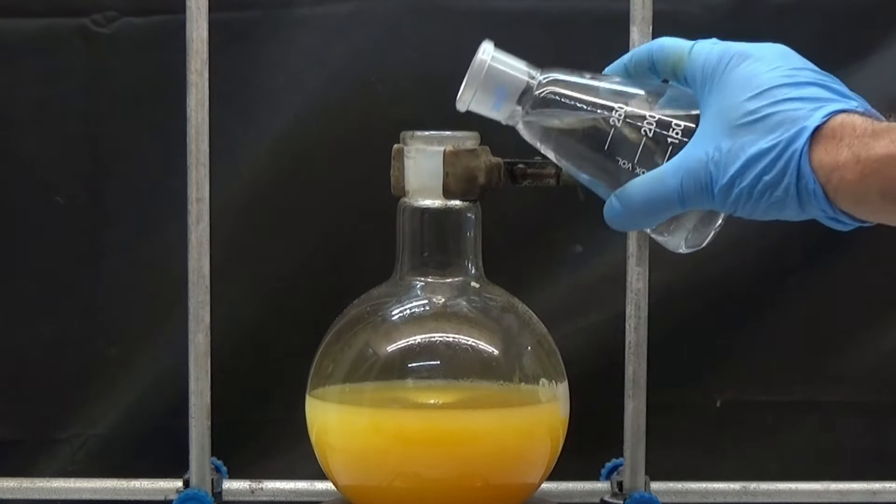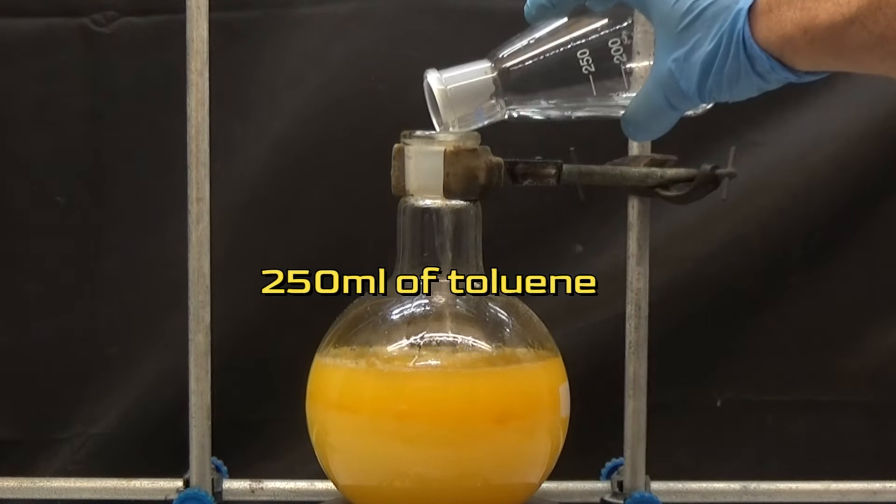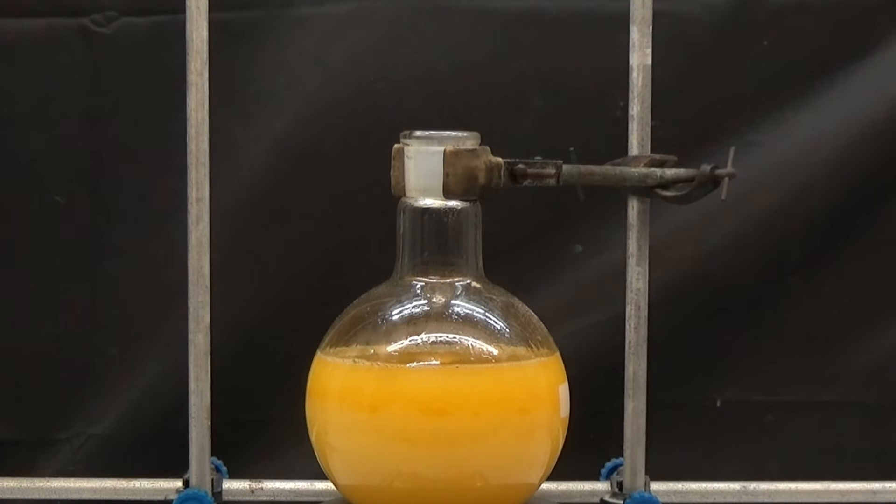To extract nitrile, add 250 milliliters of toluene. We let it stir for 20 minutes in the 1000 milliliters flask.